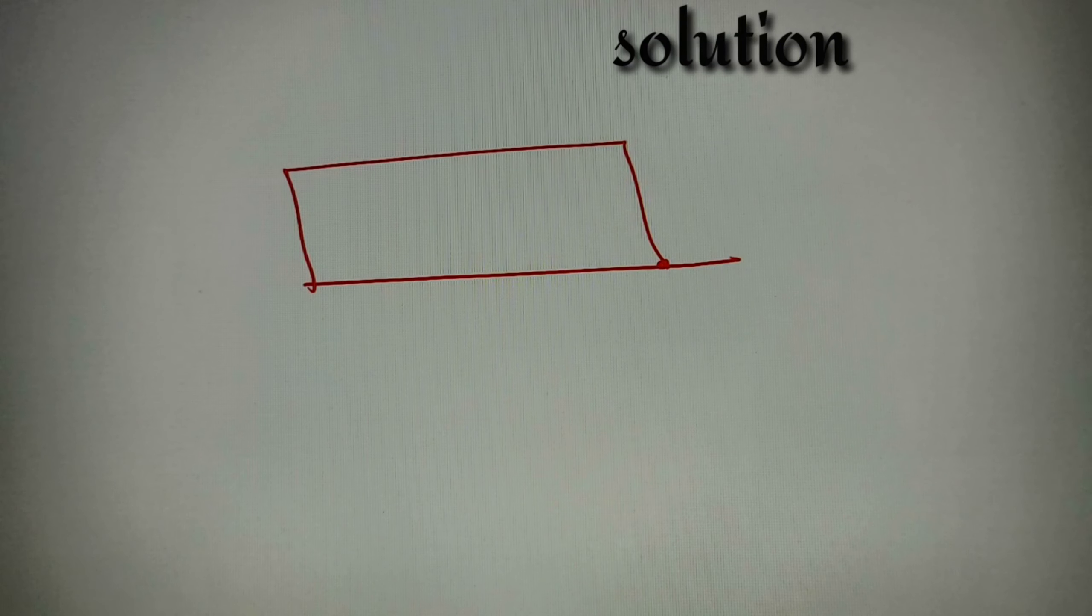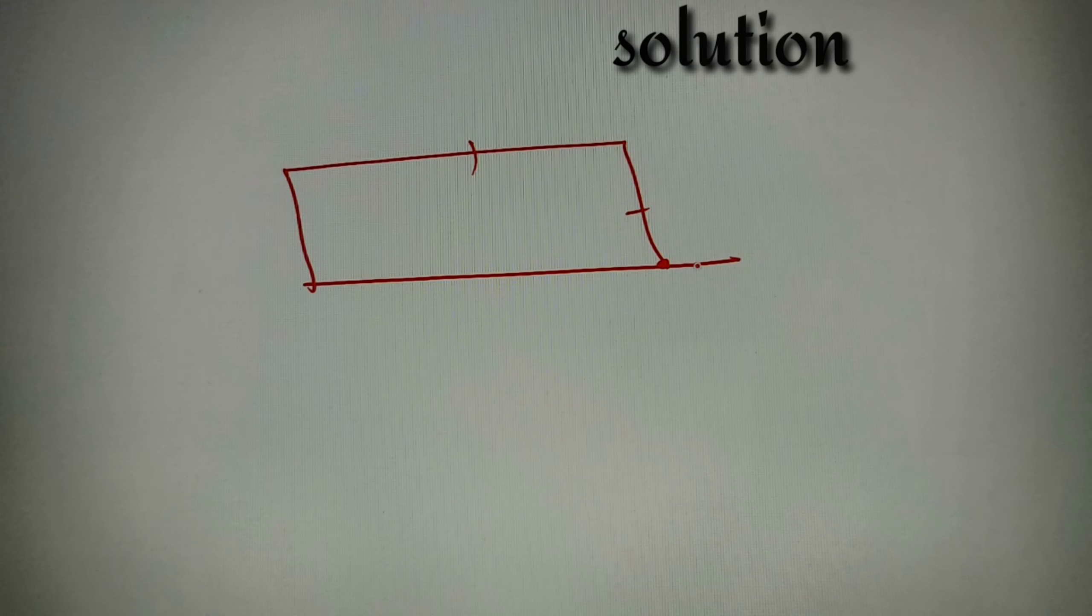According to our given question, we are given a rectangular field. So let's draw a rectangular field. The boy, instead of walking two adjacent parts, walks along the diagonal. Let's say this is the diagonal and the boy walks along this diagonal and saves half the distance of the longer part. Let's take the sides as A and B respectively and this side is equal to D.